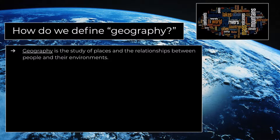Geography quite simply is the study of places and the relationships between people and their environment. There are two aspects to it: first, places themselves, and second, people and how they relate to those places — and we're going to get more specific about that as we continue.